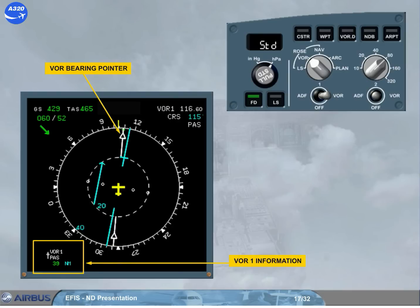Let's change the selection on the EFIS control panel to display ADF1 instead of VOR1. This is achieved by moving the number 1 ADF VOR selector to ADF. We will do it for you.